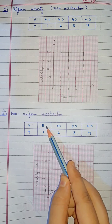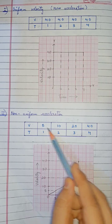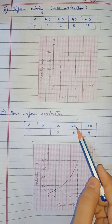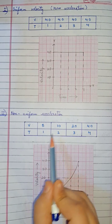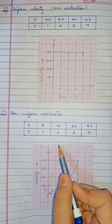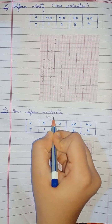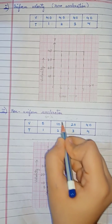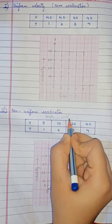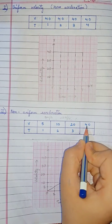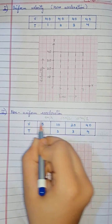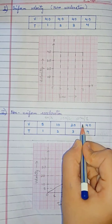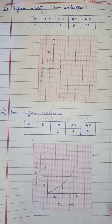Now look at the table. You can see that at 1 second the velocity is 5 meters per second, at 2 seconds it is 10 meters per second, at 3 seconds it is 20 meters per second, and at 4 seconds it is 40 meters per second. You can see that in each equal interval of time the rate of change of velocity is different — 5, 10, and 20 meters per second — so the rate of change of velocity is not equal.